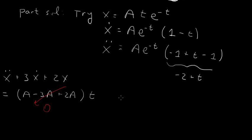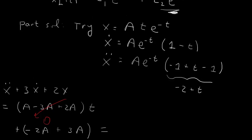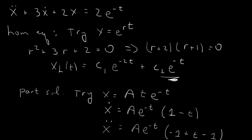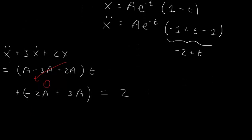The term not proportional to t gives: from x double dot, minus 2A; from 3x dot, plus 3A; and 2x has no constant term here. This equals the right-hand side, which is 2 after dividing through by e to the minus t. So 3A minus 2A equals A equals 2, giving us a equal to 2.